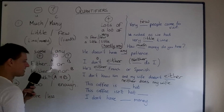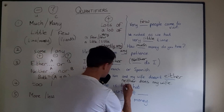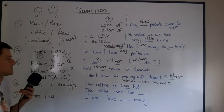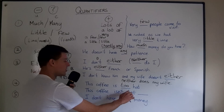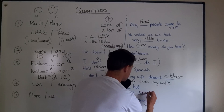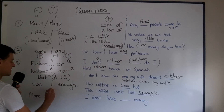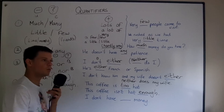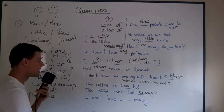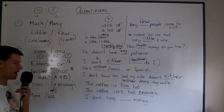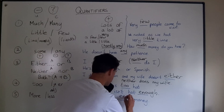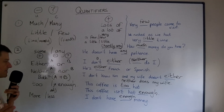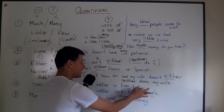Too and enough. 'This coffee is too hot' — too plus adjective means excessively. But we can also say 'This coffee isn't hot enough.' Always put the adjective before 'enough' — it's not hot enough, not warm enough. But if we're talking about a noun: 'I don't have enough money' — enough goes before a noun. So enough goes before nouns but after adjectives.